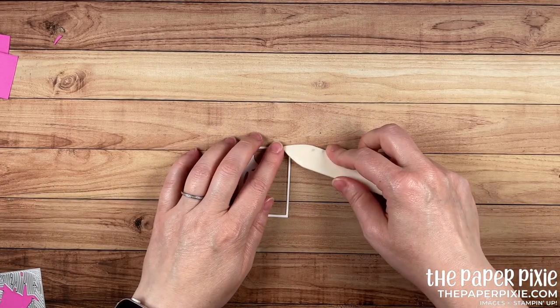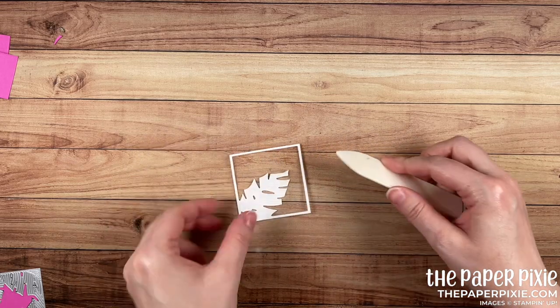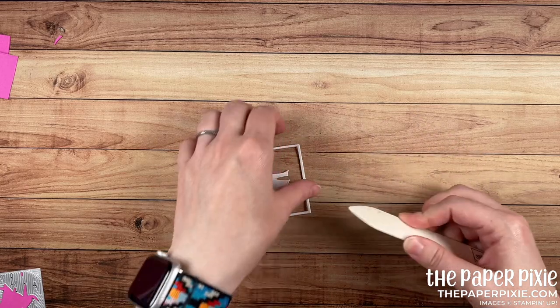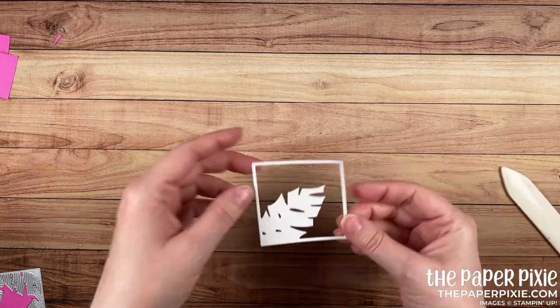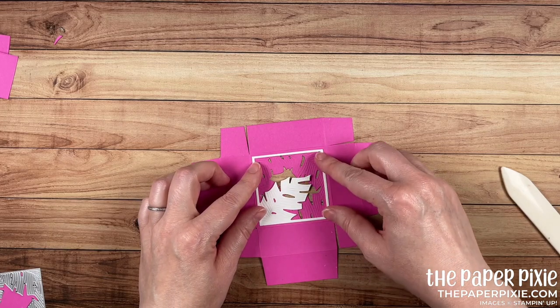Check out that window that we created. Now some of these edges are a little bit curled up so I'm just going to come in with my bone folder and just burnish those down. We'll burnish again once we adhere it to the lid but how cool is that? Now that is going to layer over our box lid like so.